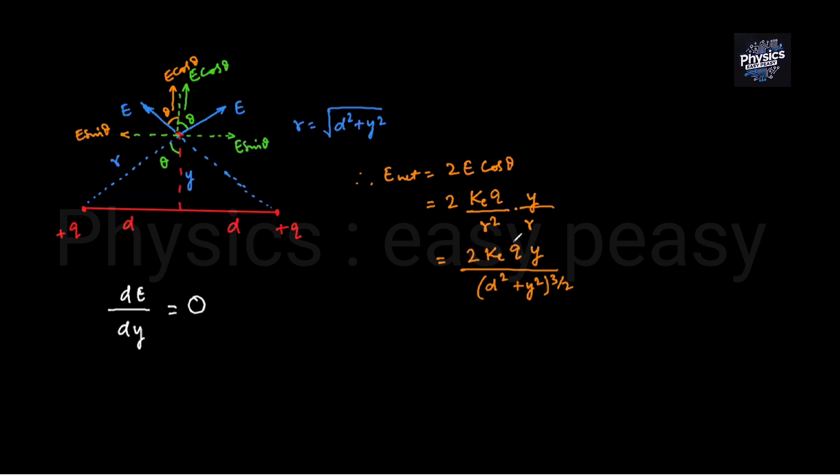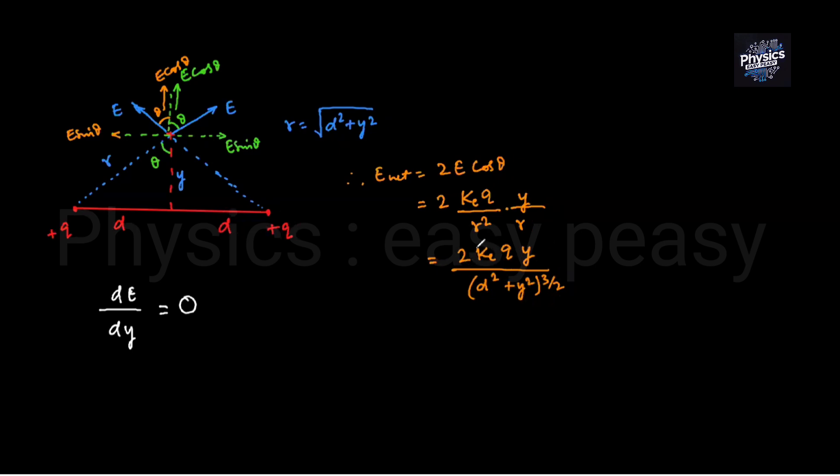In this expression, 2kq is a constant term. The variable is y. We have numerator and denominator. If we differentiate the expression, the value is 2kq times, and we apply quotient rule. Numerator differentiated: 1 times d squared plus y squared to the power 3/2 minus